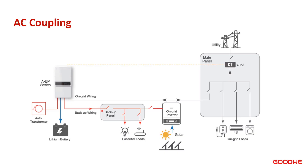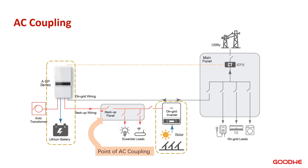Here is a diagram for AC coupling. We can see there are two parts to the system: on the left, a hybrid inverter connected with a battery, and on the right, a PV inverter connected through an AC connection — a backup panel in this case — acting as the point of AC coupling. So in this microgrid, we are seeing AC coupling between the hybrid inverter and the solar inverter.